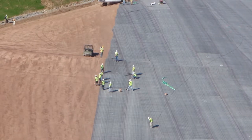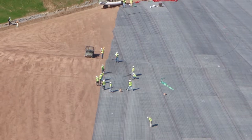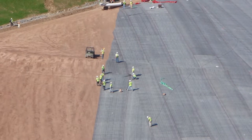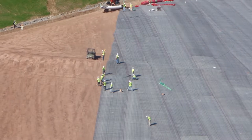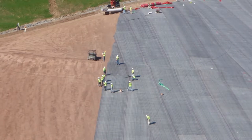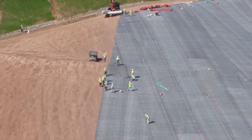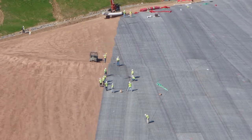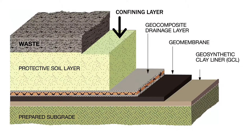Protection and confinement of the geosynthetic clay liner are crucial considerations. During liner system construction, a sufficient protective cover soil must be placed above the geosynthetic clay liner as soon as possible. The general industry guidance is to place the cover soil on the same day of geosynthetic clay liner deployment. The sooner a confining cover layer is added, the sooner the natural hydration process begins.